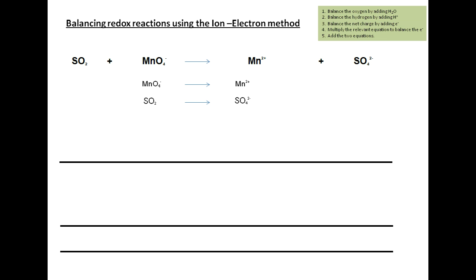The first step is to balance the oxygen by adding H2O. Looking at the first half-reaction, MnO4⁻ has four oxygens on the left and no oxygens on the right, so we add four H2O to the right-hand side. The next step is to balance the hydrogen by adding H⁺ ions. We have four H2O on the right, so we add 8H⁺ on the left-hand side so that the hydrogens are balanced.